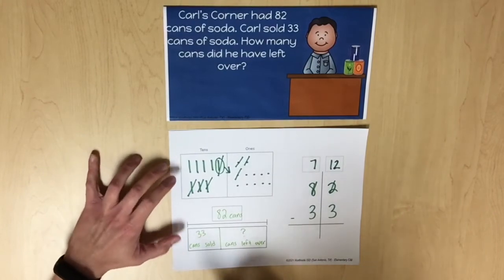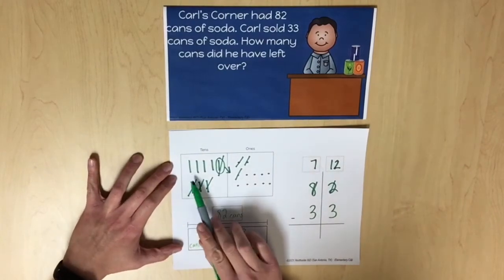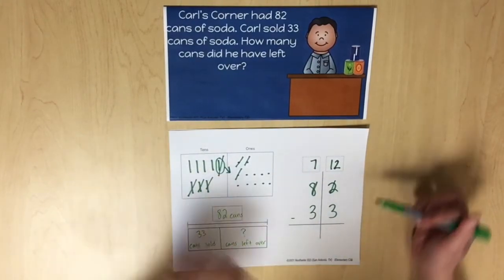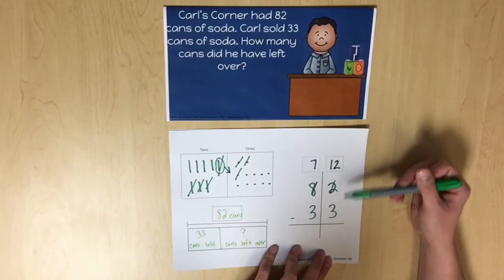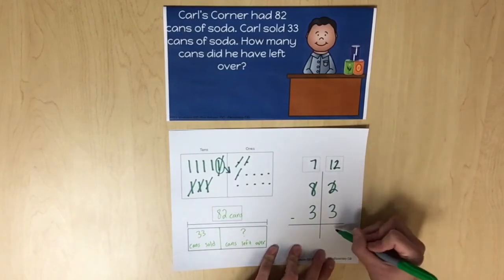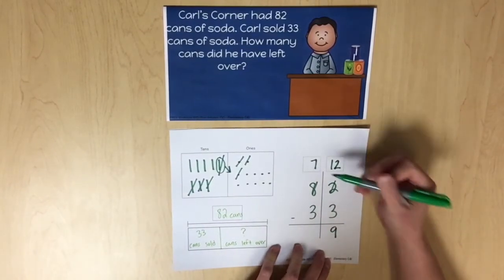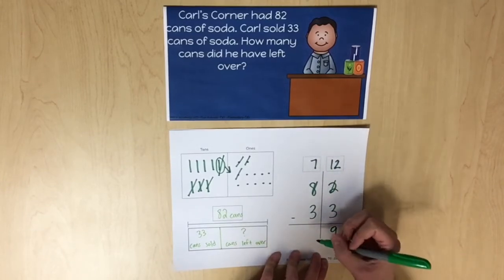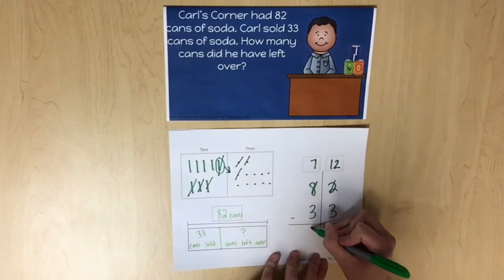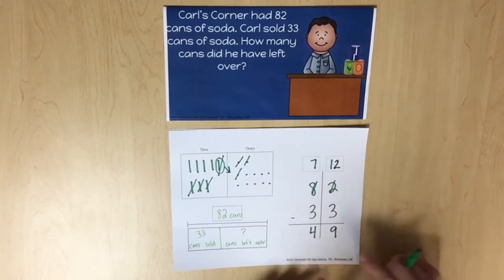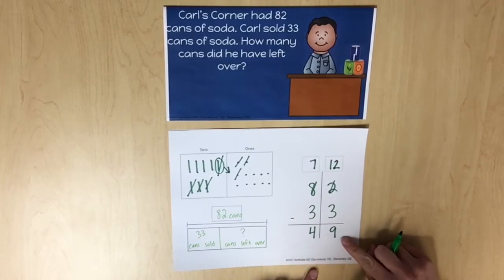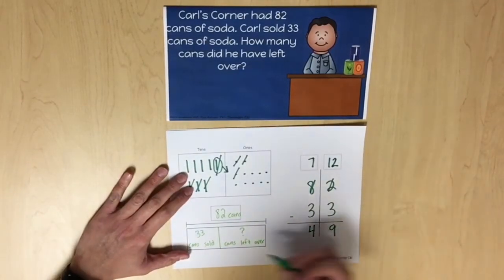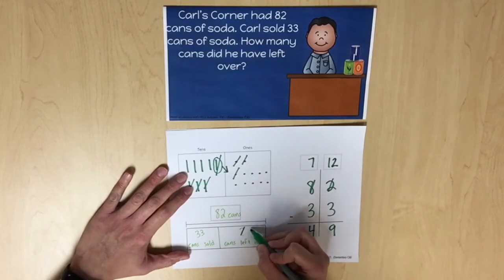We can see that there are 4 tens remaining. Using our pictorial representation, the result is 49. In our standard algorithm, 12 minus 3 is 9, and 7 tens minus 3 tens is 4 tens. Again, we have a result of 49. Carl had 49 cans of soda left over.